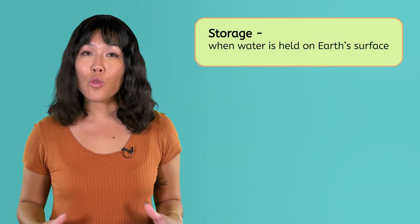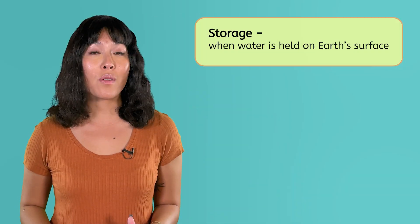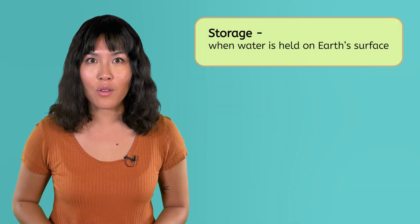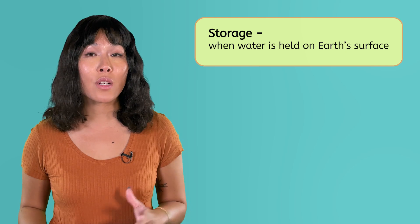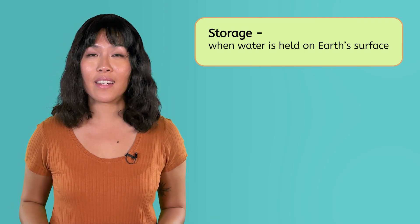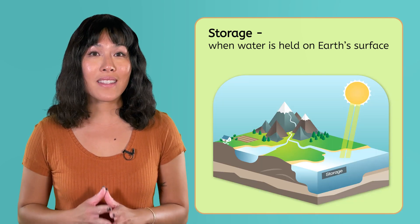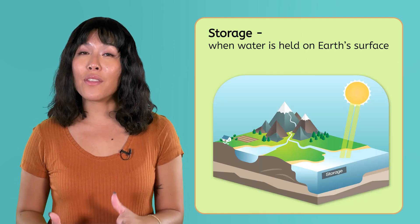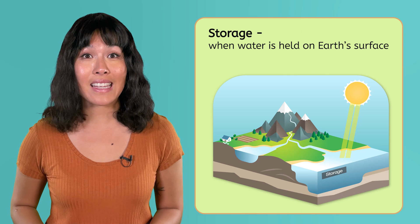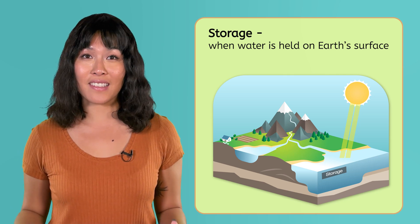Water in storage is the starting point for many stages in the water cycle. Storage is when water is held somewhere on Earth's surface, like in an ocean, river, or lake. Water might stay in storage for a while or undergo another process, like evaporation.